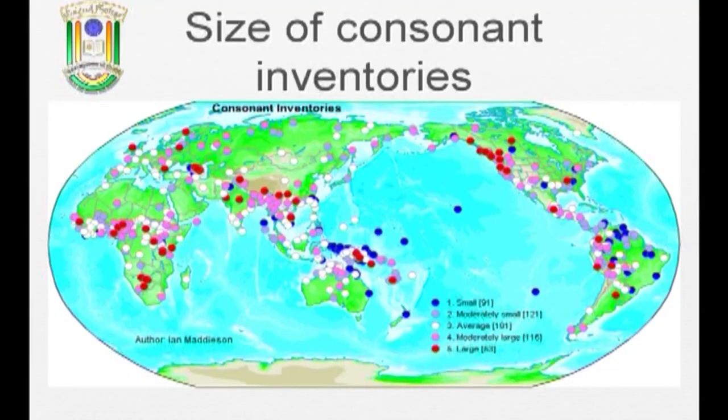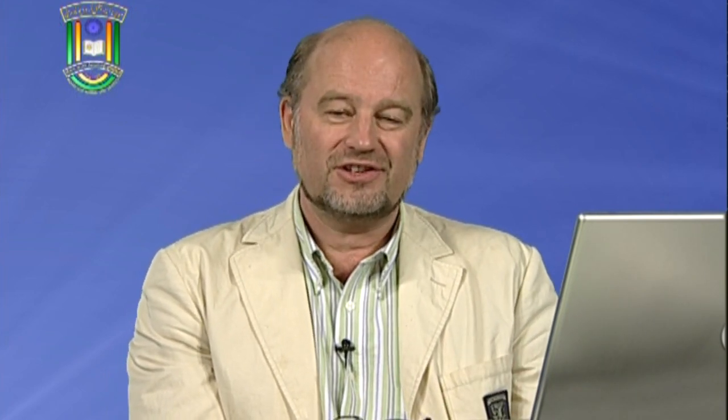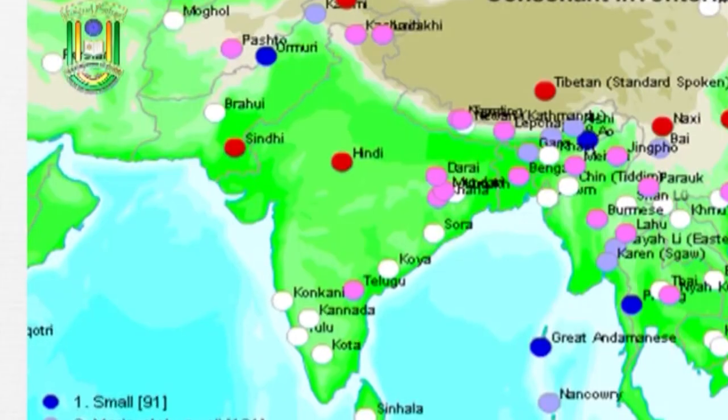If you think about languages around the world and ask how many consonants they have, that's an interesting question. This map from the World Atlas of Language Structures, compiled by phonetician Ian Maddieson, indicates the size of consonant inventories — how many consonants operate in a language. If you look at the location of English, represented by Old English in Britain, you see a sort of average. Samples from India also show average consonant inventories, so no big difference there.